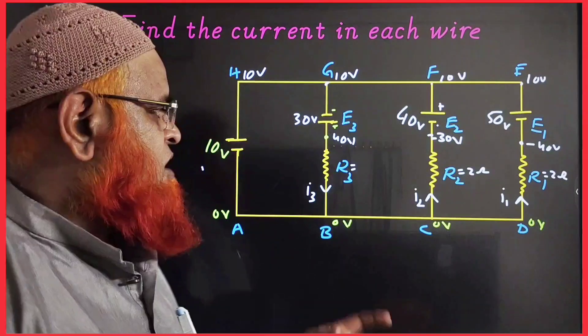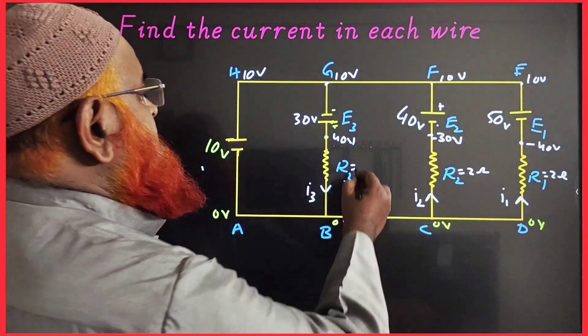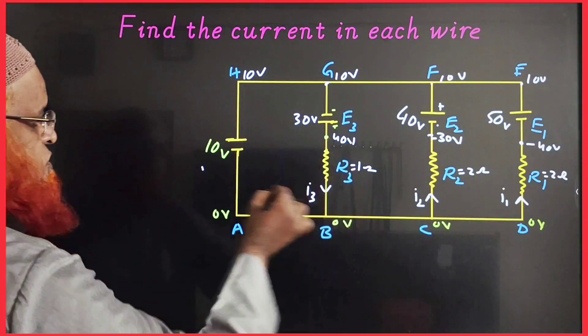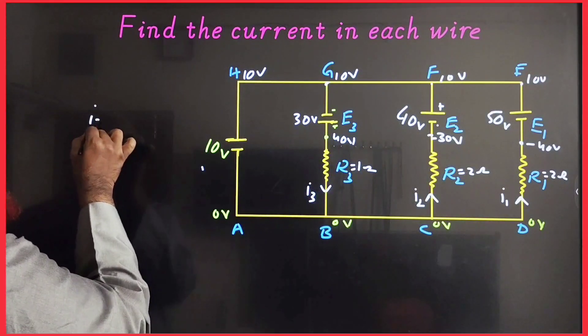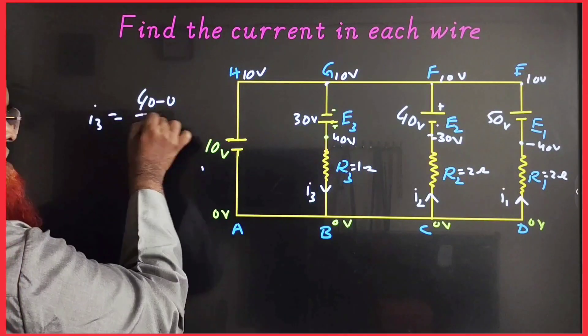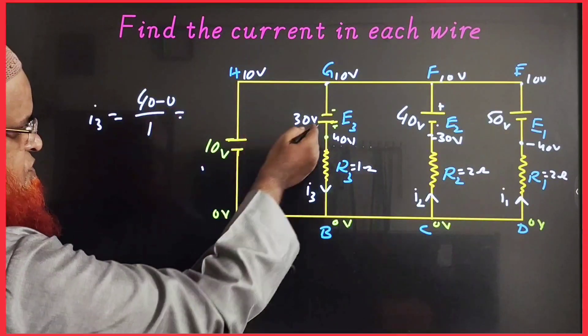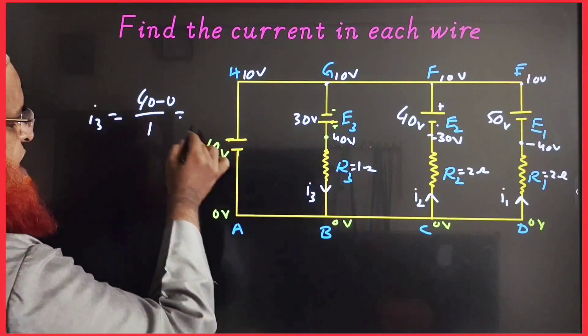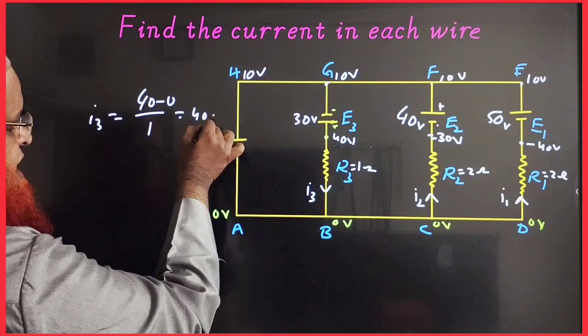Now, next you have to find out the current in these resistances. In this resistance, the current is given as I3. Current is flowing in this direction. Therefore, 40 minus 0 divided by 1 ohm - that is delta V by R - equals 40 amperes.